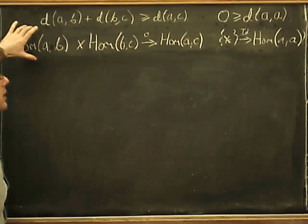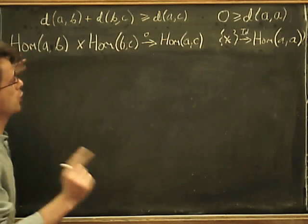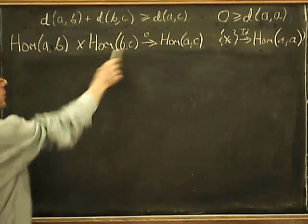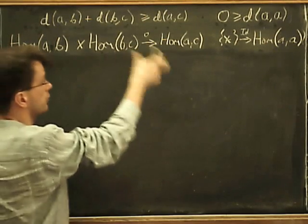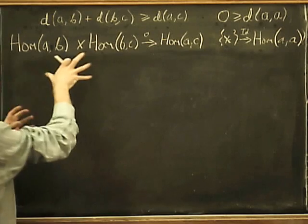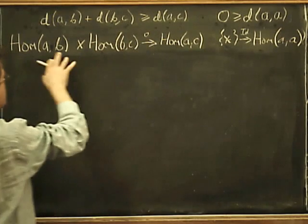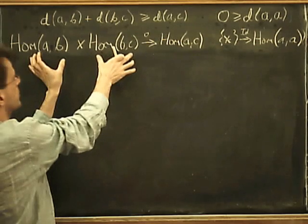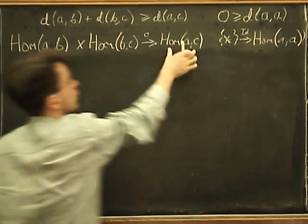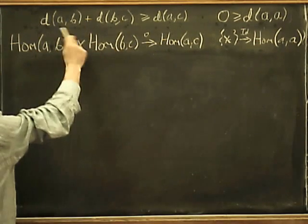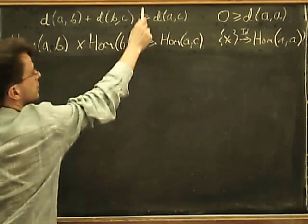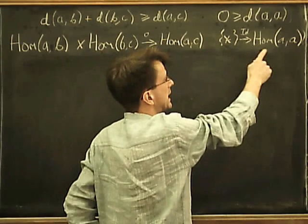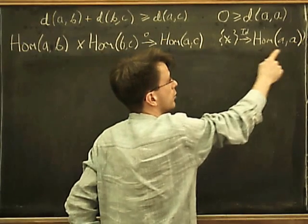On the other hand we've got the standard two morphisms in a category which are composition morphism, sorry it's a sort of meta-morphism, it's part of the structure of a category. So if we've got a category then we've got the notion of composition from two homsets to a third homset, which looks bizarrely like this, at least structurally.